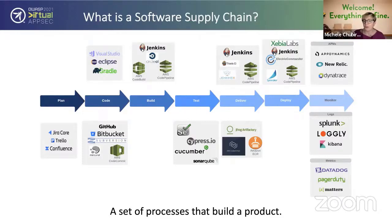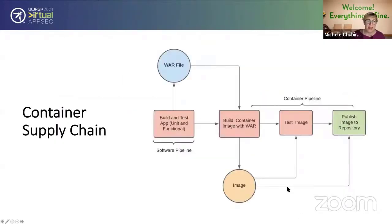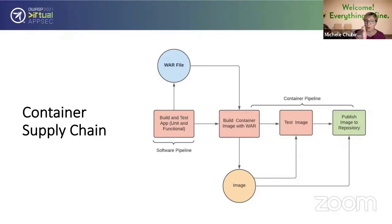Now that we've looked at the software supply chain, let's break it down into a container supply chain. I like to think of the entire software release process as a pipeline of pipelines, because you have infrastructure as code and one of the sub-pipelines is your container pipeline. You make your WAR file, build your container with it, get an image, test your image, and then publish it to an image repository.